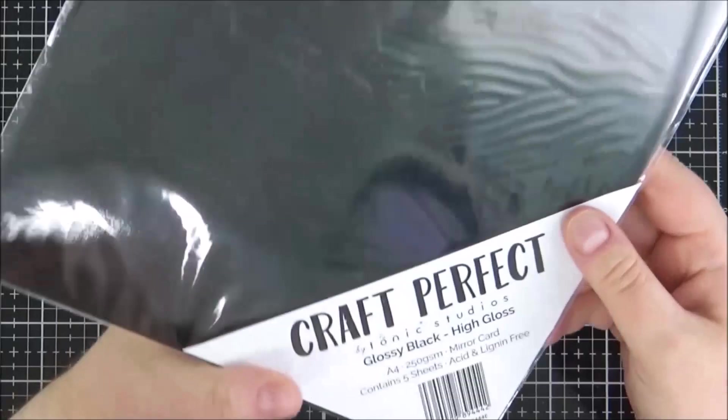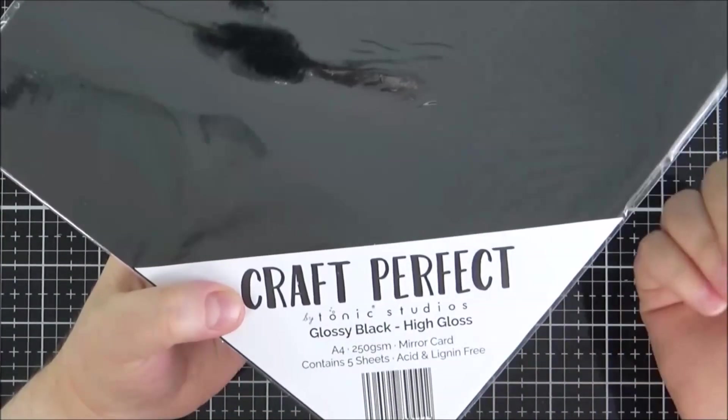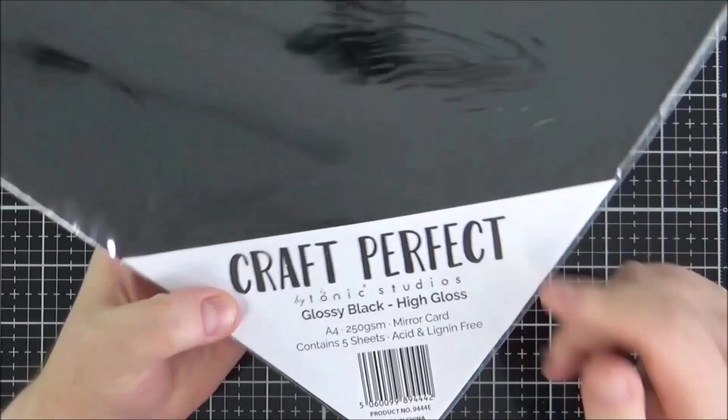It kind of just cuts out the time of waiting for the glossy accents to dry and so I wanted to pick some up as well and I'm probably going to use it pretty much for the same reason. Anything that I want black that I would add gloss to it. I can probably cut a bit of time out and use the cardstock instead.